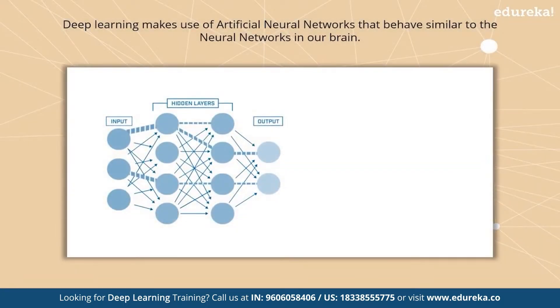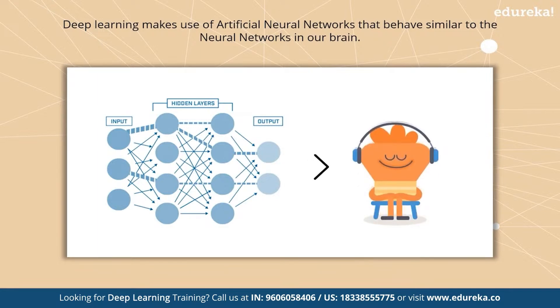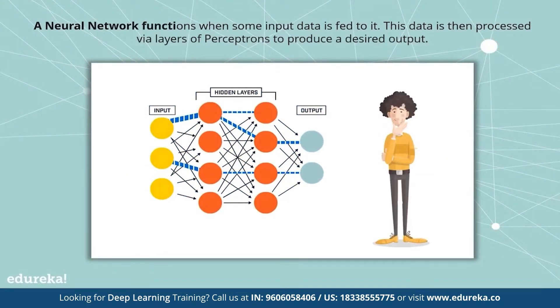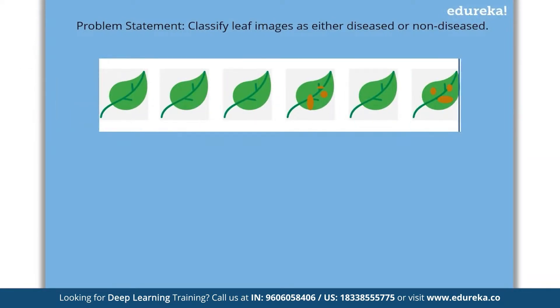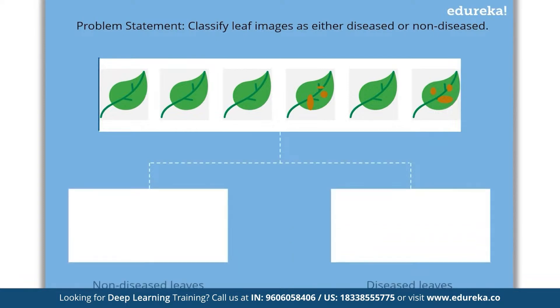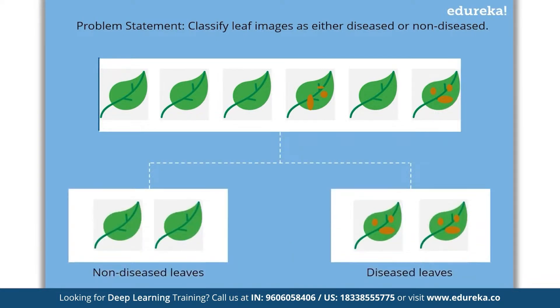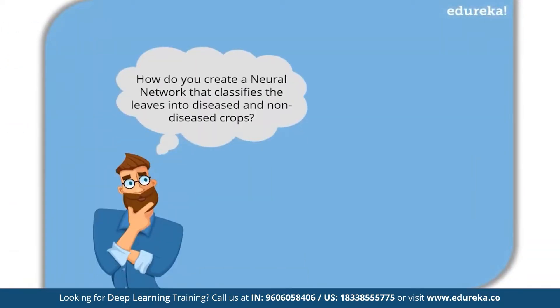Deep learning makes use of artificial neural networks that behave similar to the neural networks in our brain. A neural network functions when some input data is fed to it. This data is then processed via layers of perceptrons to produce a desired output. Let's understand neural networks with a small example. Consider a scenario where you have been given a set of labeled images and you have to classify them into two classes.